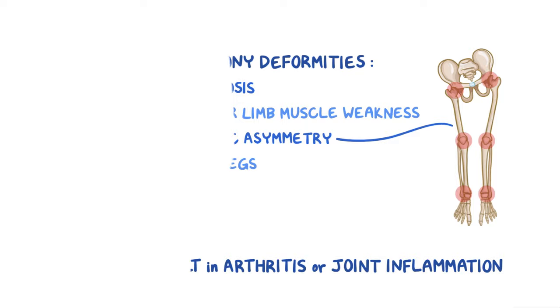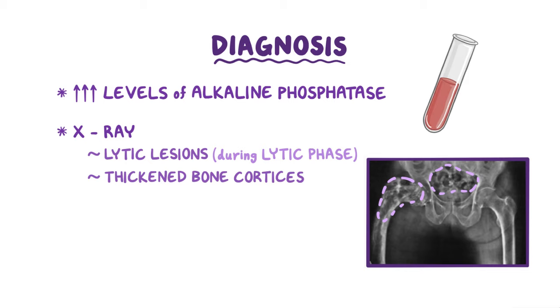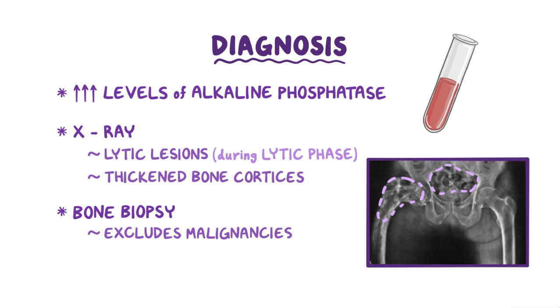The diagnosis of Paget's disease of bone is usually done by checking for elevated levels of alkaline phosphatase. In addition, an x-ray might show lytic lesions during the lytic phase of the disease, or thickened bone cortices in advanced cases. Finally, a bone biopsy is usually done to exclude malignancies, which can mimic some of the findings of Paget's disease of bone.